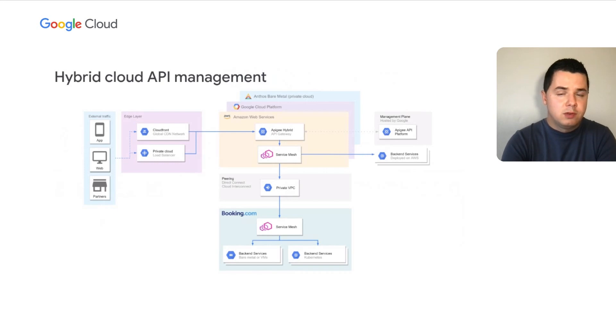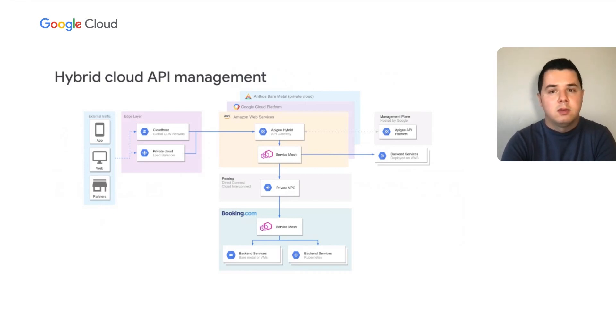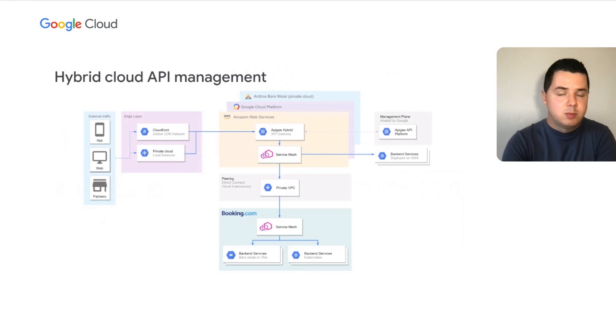In technical details, we wanted to show how our hybrid cloud API management works in terms of infrastructure and traffic. We're running in our private cloud — our on-prem deployment uses Anthos Bare Metal — but we're also running in GCP and AWS. Traffic comes from different sources through a CDN network or our private cloud network, then is handled by Apigee hybrid, which sends traffic to destination target APIs through ServiceMesh. ServiceMesh routes traffic to bare metal servers, VMs, or Kubernetes services. The management plane is hosted by Google, providing a common management plane wherever our runtime is running.